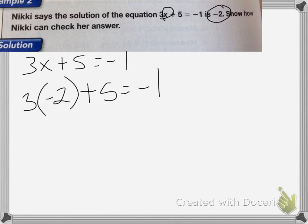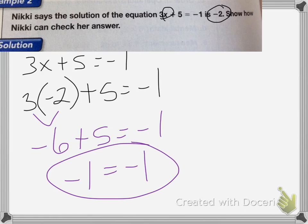We do multiplication first. 3 times negative 2 is negative 6 plus 5 equals negative 1. Negative 6 plus 5 is equal to negative 1 equals negative 1. So her answer is correct. And that's it for this lesson.